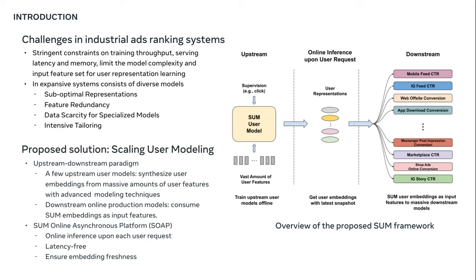To capitalize on advanced user modeling techniques, promote efficient and scalable user representation sharing across models, while addressing the aforementioned practical challenges, we propose Scaling User Modeling, or in short, SUM — an online framework revolutionizing user modeling within Meta ads. SUM adopts an upstream-downstream paradigm. It leverages a few designated upstream user models to synthesize user embeddings from massive amounts of user features with advanced modeling techniques. These embeddings then serve as inputs to downstream online ads ranking models, promoting efficient representation sharing.